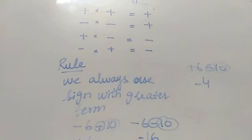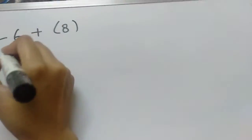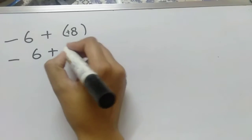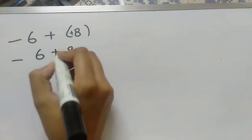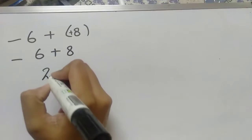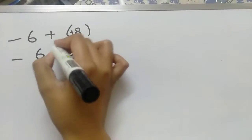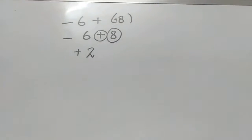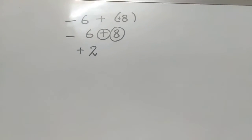Now we will solve our questions. For example we have minus 6 plus 8. Because we have a plus sign here, plus plus is plus and plus 8. Plus minus is minus so we subtract, it will be 2, and with the bigger sign being plus we write plus sign with it. So that's how we will solve the question.